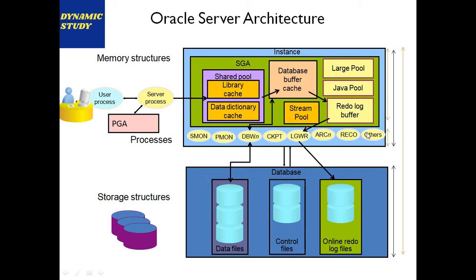The Oracle instance is divided into two parts: one is the SGA (System Global Area or Shared Global Area — both are correct) and second is the background processes, which include SMON, PMON, DBWriter, CHECKPOINT, LOGWriter, ARCHIVER (number one to ten), recovery process, and other processes.